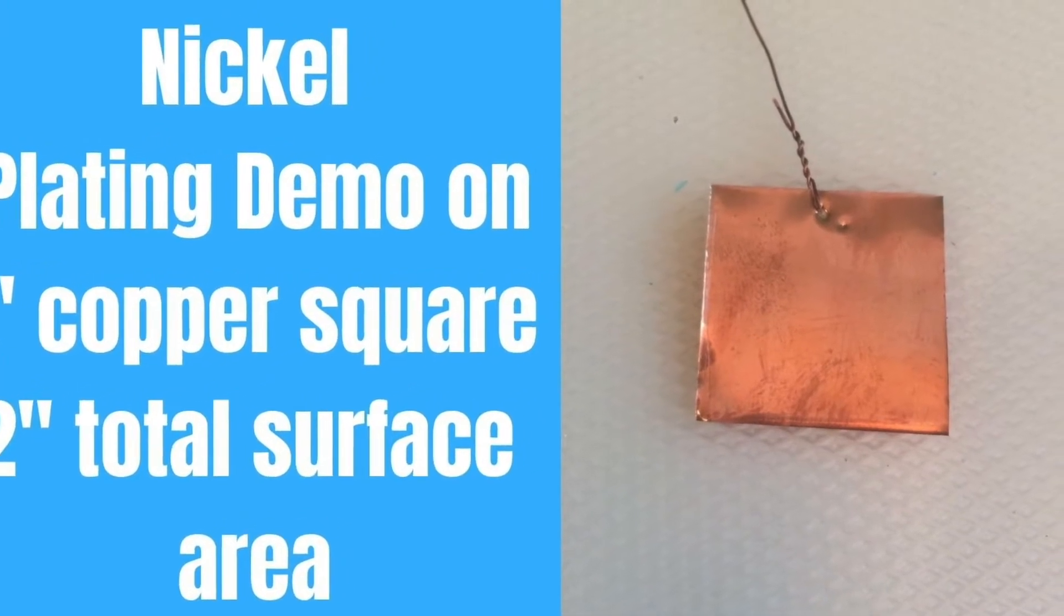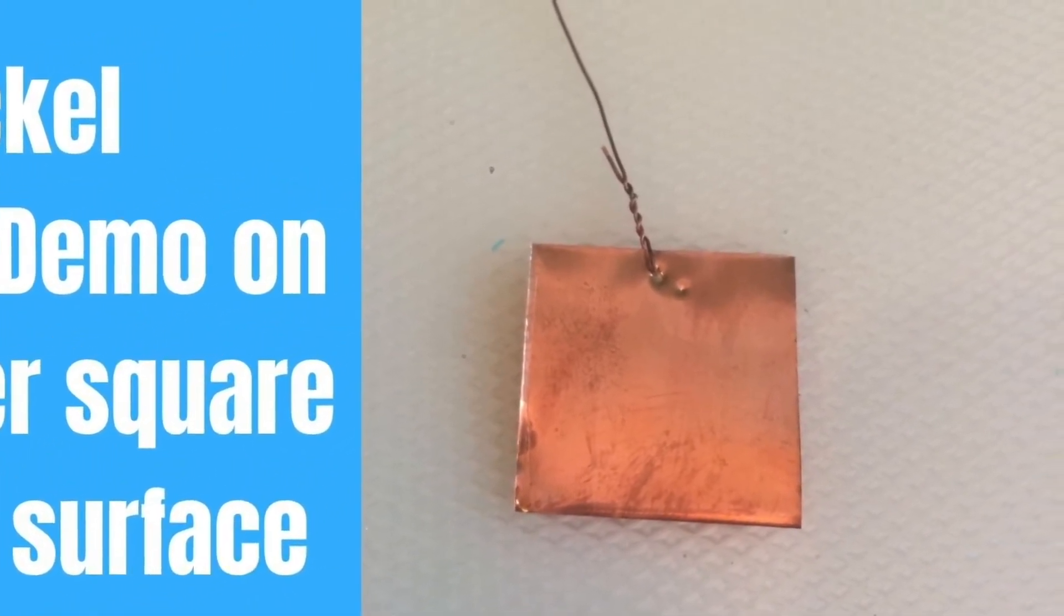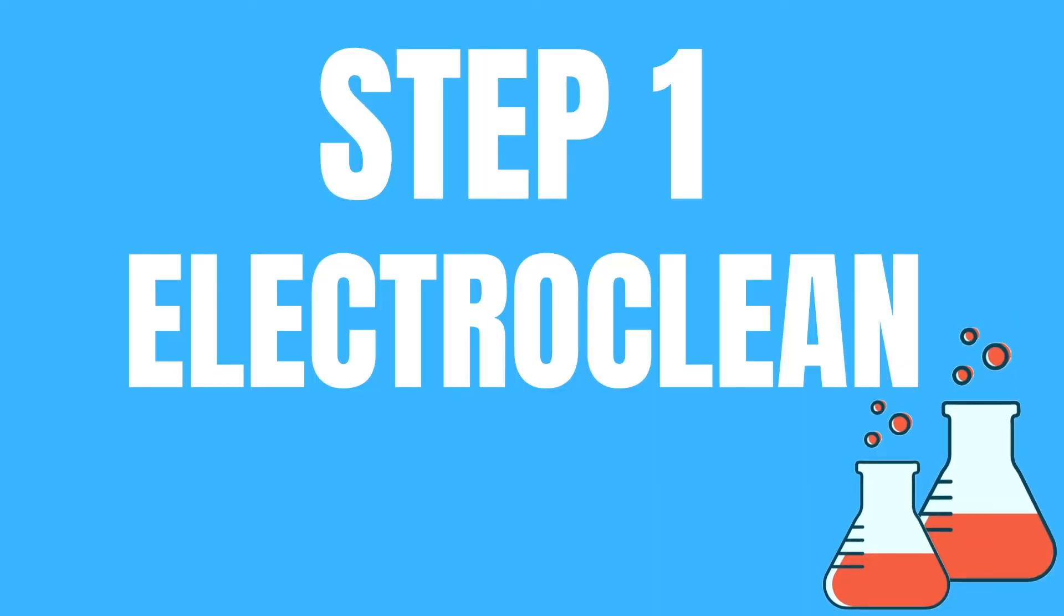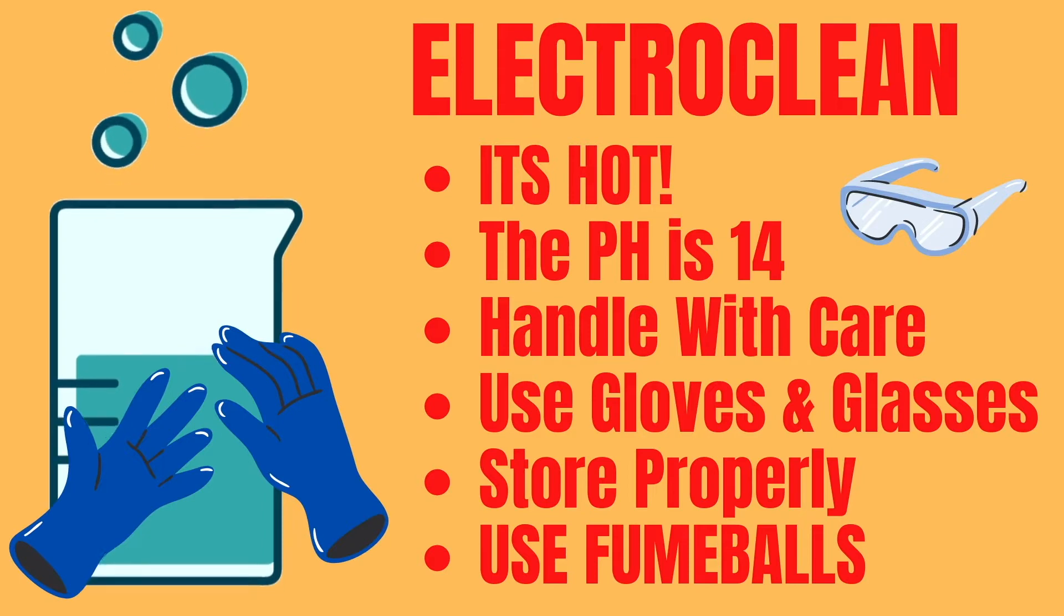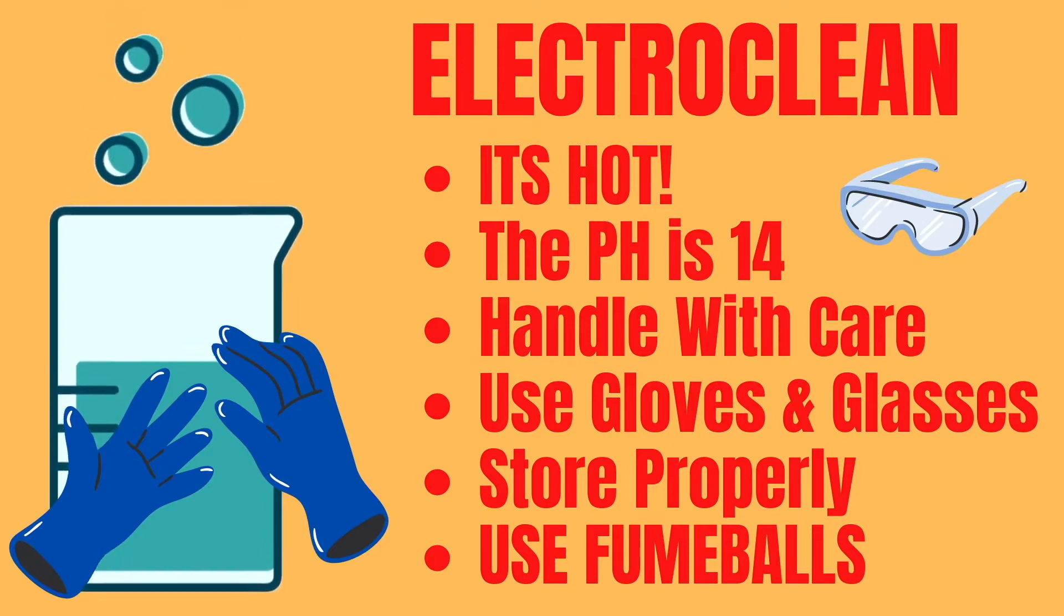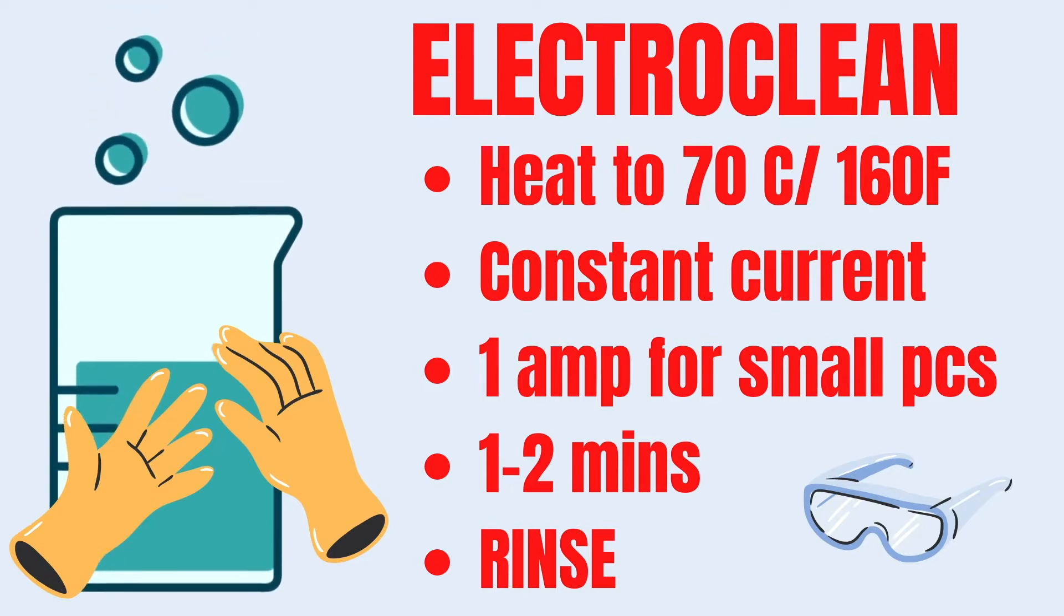Today we will be plating this 1 inch square copper piece, 2 inch square total surface area. You'll notice that I set the power supply to 1 amp and 8 volts. The 8 volts doesn't have to be exact 8. It could be 7, 8, 9, 10, something in that range. But you want 1 amp for a small piece of jewelry.